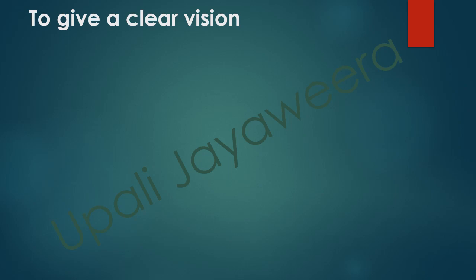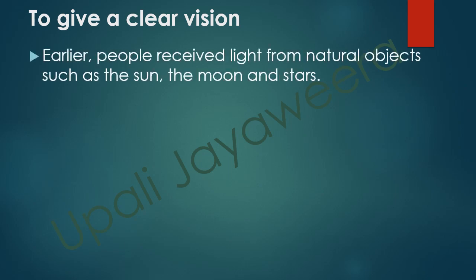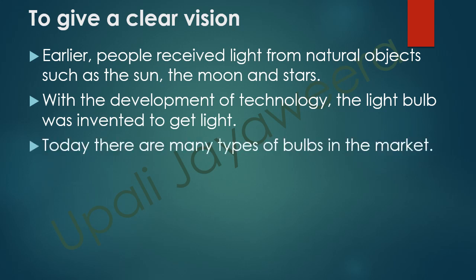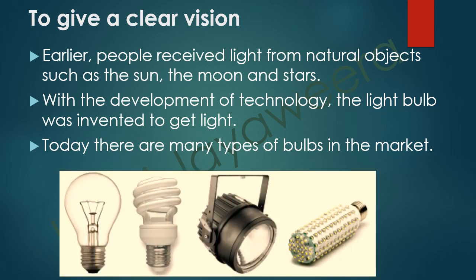One use of light is to give clear vision. Earlier, people received light from natural objects such as the sun, the moon, and stars. With the development of technology, the light bulb was invented. Today there are many types of bulbs in the market, as shown in this diagram.